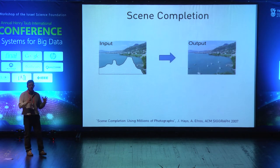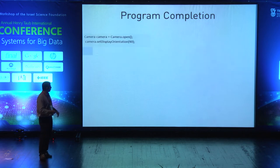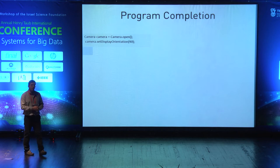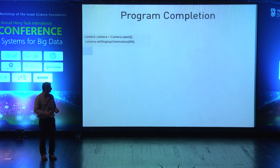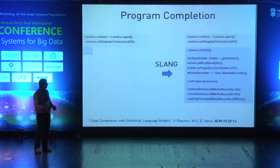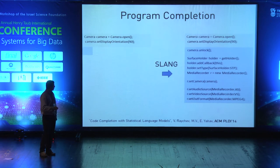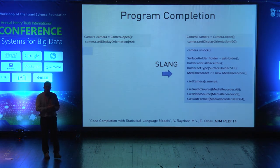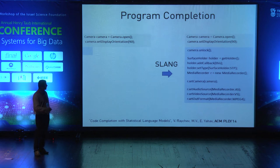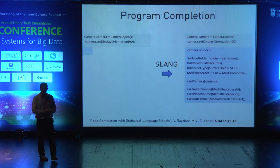There is an analogous problem in the field of programming, where you have a program which you have written partially and you may wonder what you should do next. We have built a system that can take programs like this and actually figure out how to complete these programs — how to generate new code that didn't exist before. This system, Code Slang, appeared last year and is based on deep learning techniques over a large code basis. These probabilistic models can actually complete and generate new code that did not exist before — this completion was not in the training data.